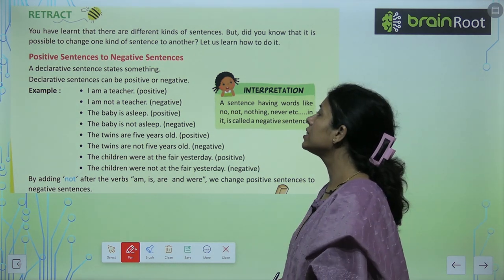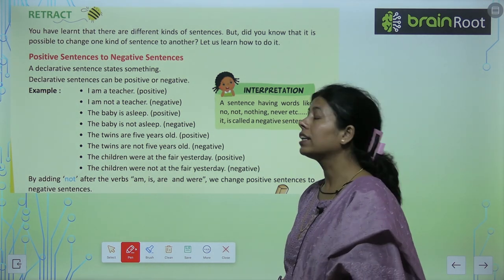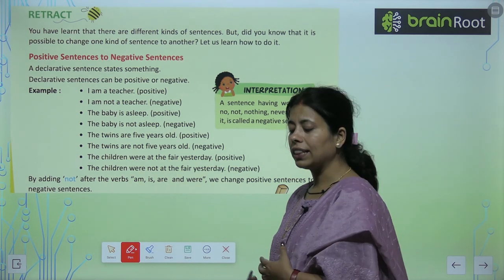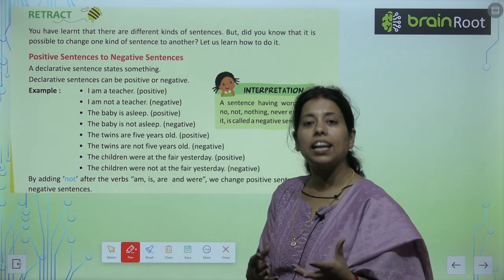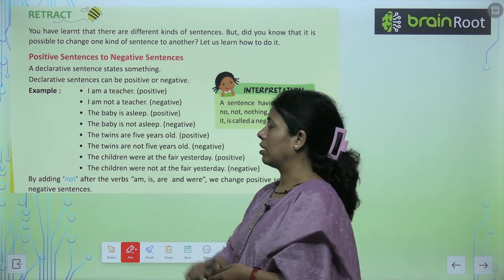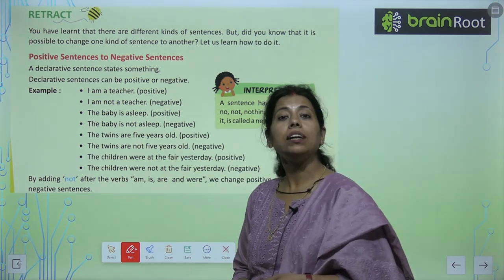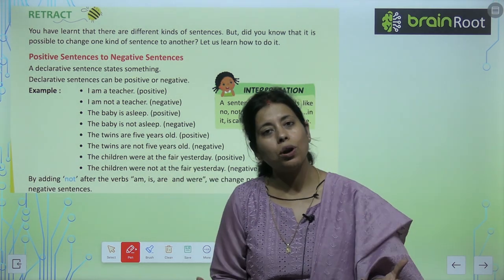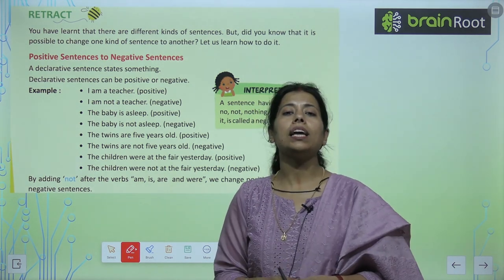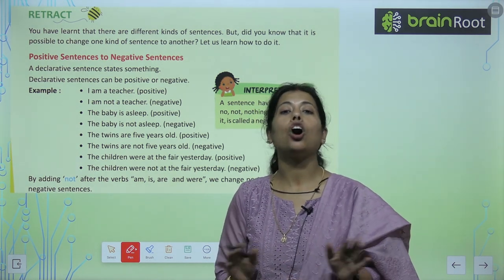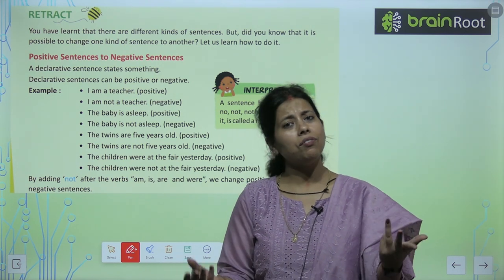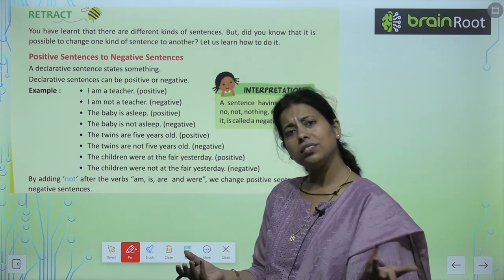A declarative sentence states something — a declaration. जो एक declarative sentence है, इसमें आप declare करते हैं: 'I am a teacher.' तो इसको कैसे बोलेंगे? 'I am not a teacher.' हमने 'not' लगाके इसको negative में convert कर दिया।